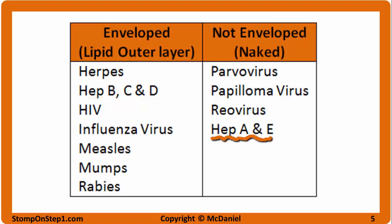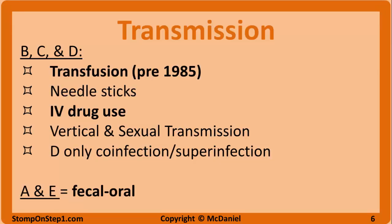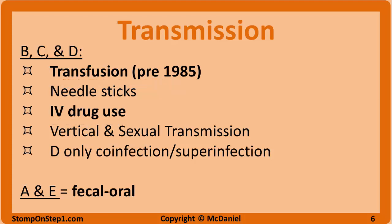An easy way to remember this is that the letters A and E are actually in the word naked. Hepatitis B, C, and D are transmitted through IV drug use, blood transfusions before 1985 when screening was implemented, and needle sticks. Hepatitis B can also be transmitted sexually or from mother to fetus via vertical transmission. Hepatitis A and E are transmitted by the fecal-oral route in tainted food or water. Undercooked seafood is another source for hepatitis A and E. Prevention includes improved sanitation, clean water, better hand hygiene, and heating food properly.